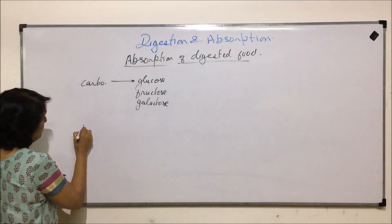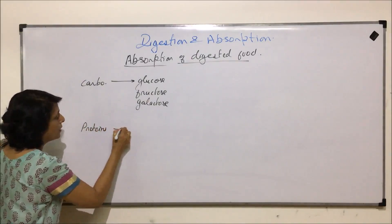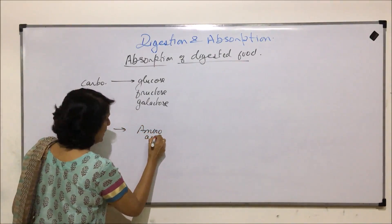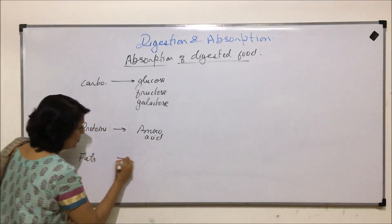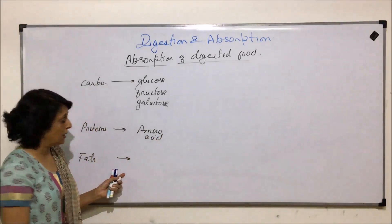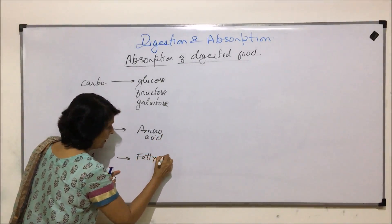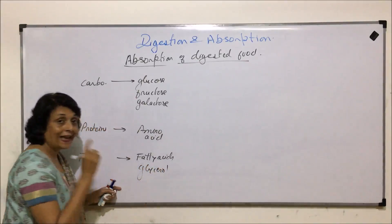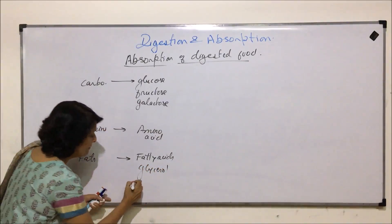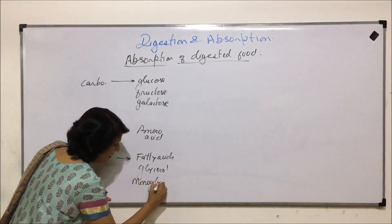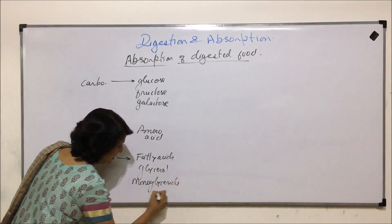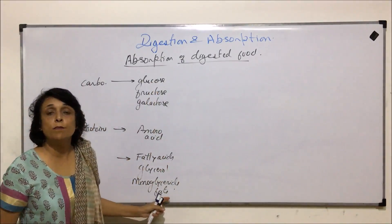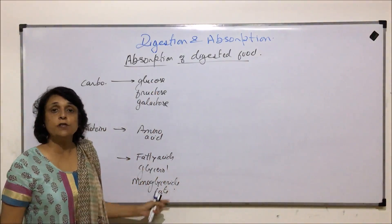Proteins are broken down into simplest units, that is amino acids. Carbohydrates and fats are broken down into three things: fatty acids, glycerol, and monoglyceride fats. We need to understand how these simpler molecules get absorbed.